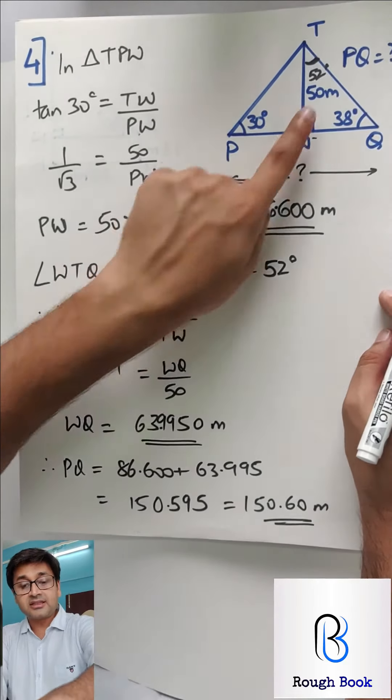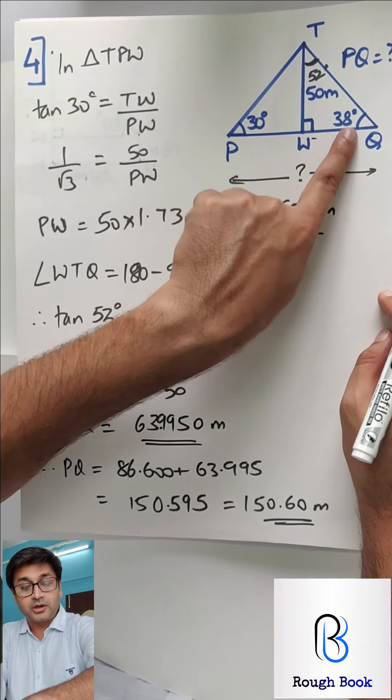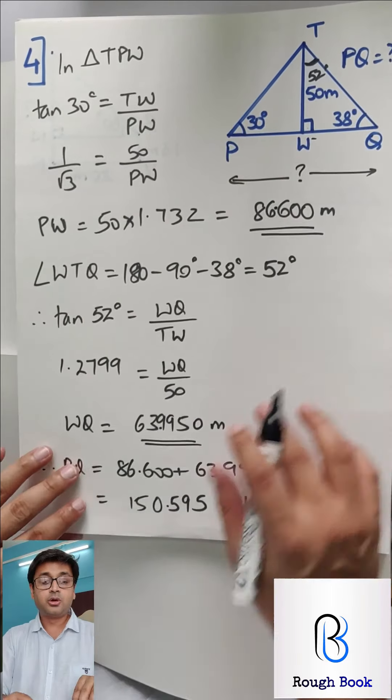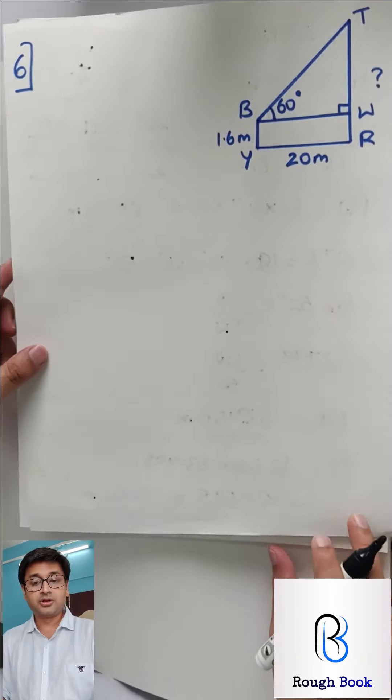Finally, PQ is going to be 86.600 plus 63.995. So I get 150.59. Converting to 2 decimals, 150.60 meters. Always go for the final decimals and then convert to 2 decimals in the end. So that you are always safe.